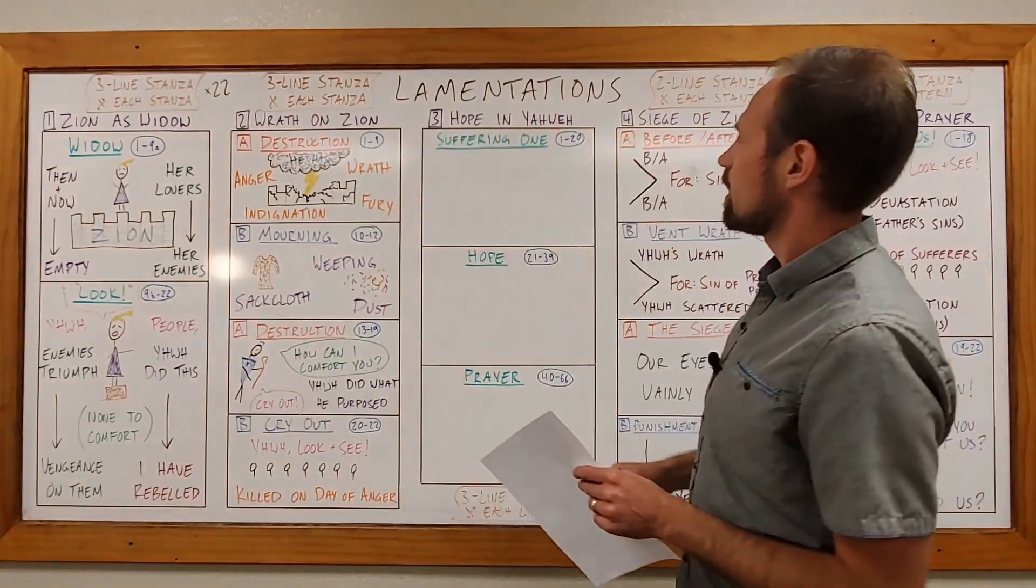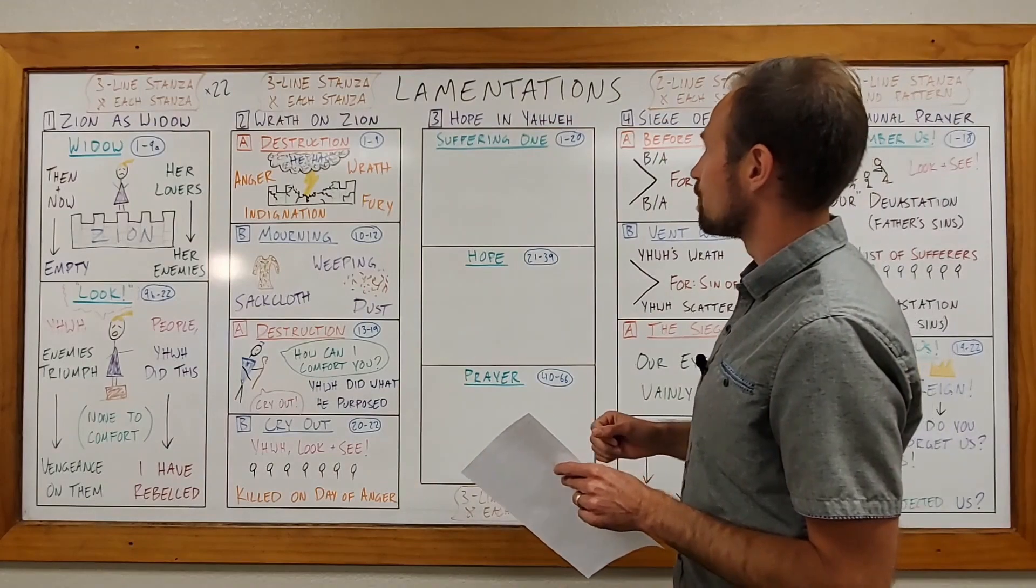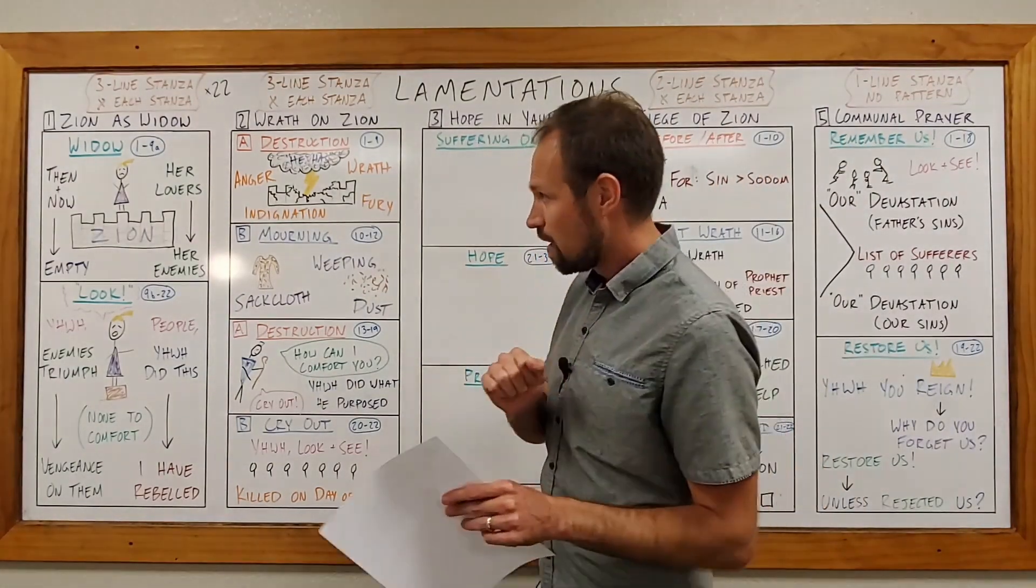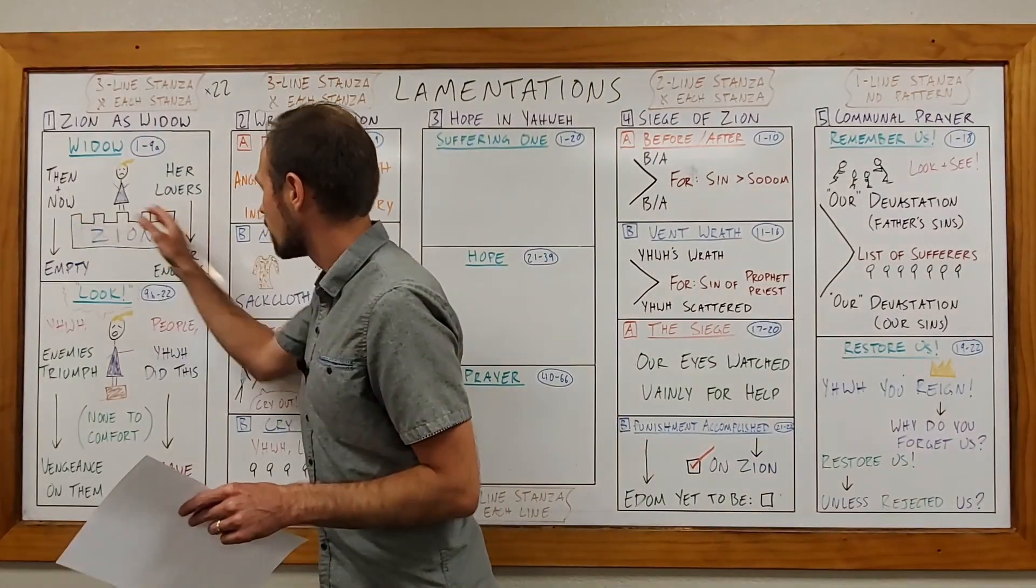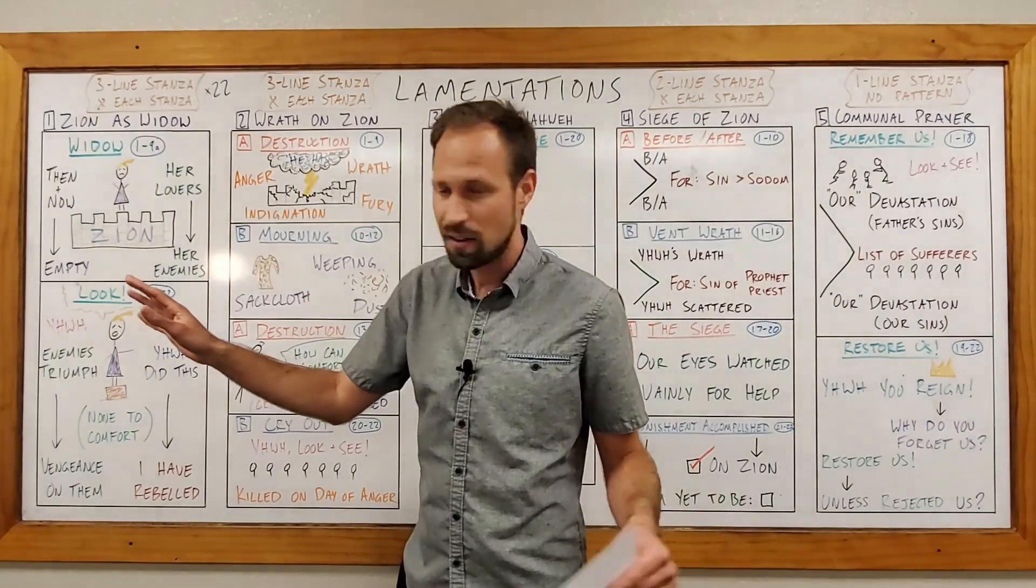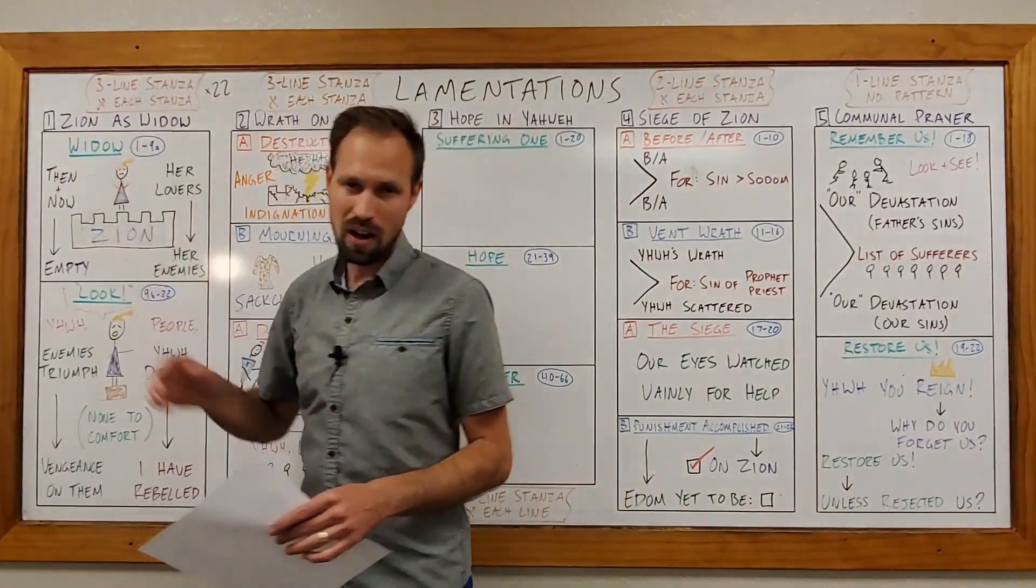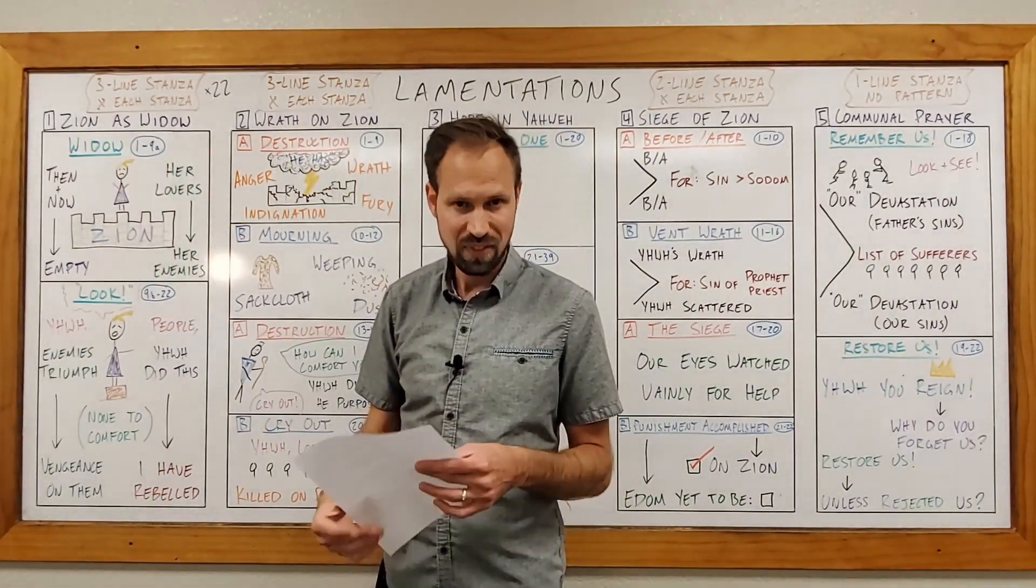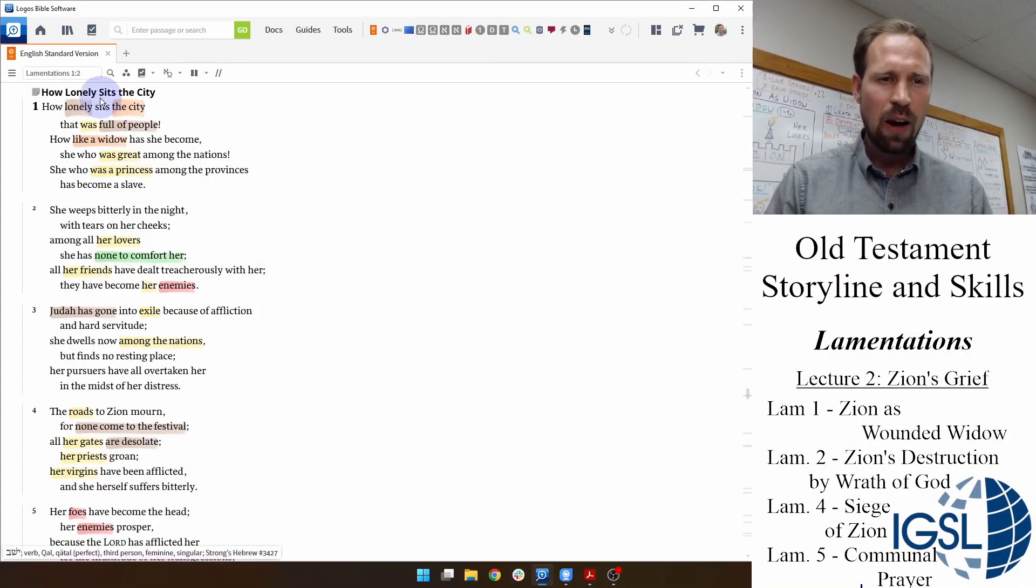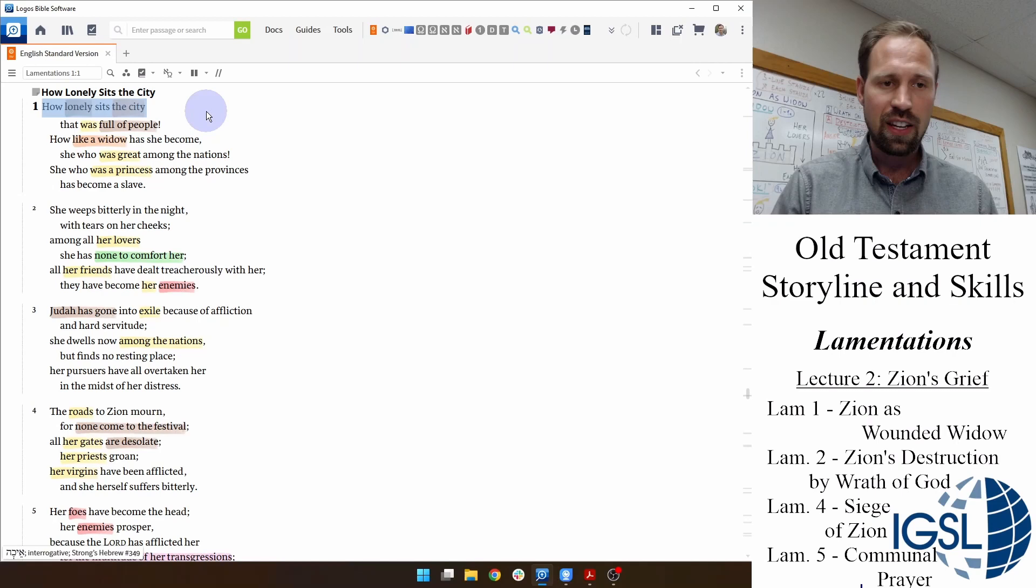That's what Lamentations helps them to do. The poet of Lamentations begins in his first poem by imagining the city of Zion as a woman whose whole family has been killed, and now she is a widow left all alone. Let's take a look at the opening lines of Lamentations. How lonely sits the city that was full of people. How like a widow she has become.